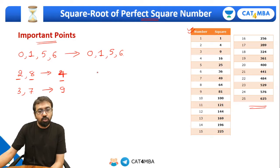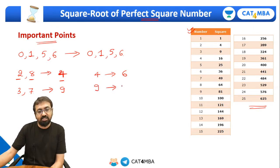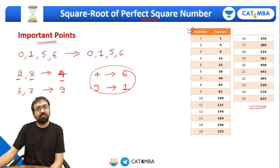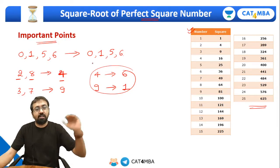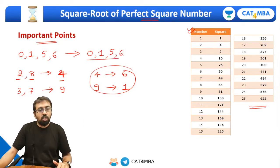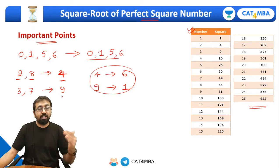So we have covered digits 0, 1, 2, 3, 5, 6, 7, 8. If you take four, the last digit of its square will be six. And if you take nine, the last digit will be one. So to summarize: 0, 1, 5, 6 — same last digit in square; 2 and 8 — last digit is 4; 3 and 7 — last digit is 9; 4 and 9 — last digits are 6 and 1 respectively.